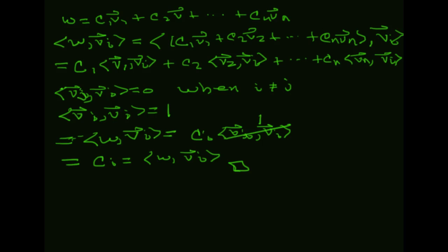So what we're going to do here is develop a process called the Gram-Schmidt orthonormalization process that will actually be able to create, given any basis for the vector space, an orthonormal basis.